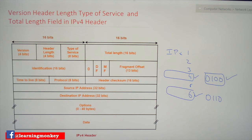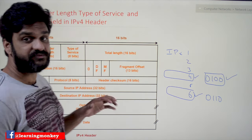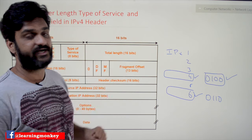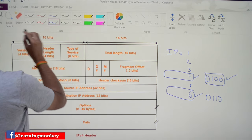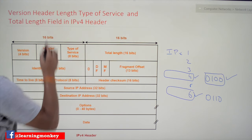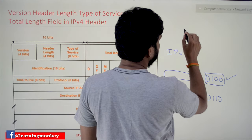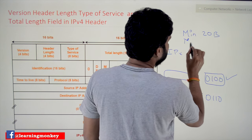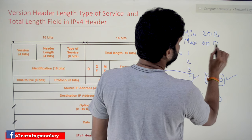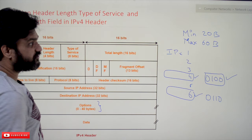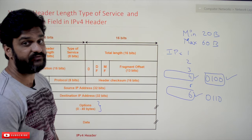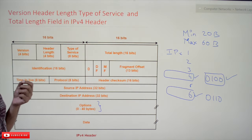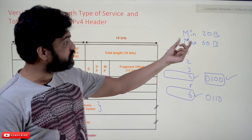The next field is Header Length, which also occupies four bits. Header length means the number of bytes present within the header. As discussed previously, the minimum header length is 20 bytes and the maximum is 60 bytes, because the optional fields can occupy up to 40 bytes. So the minimum is 20 and the maximum is 60.